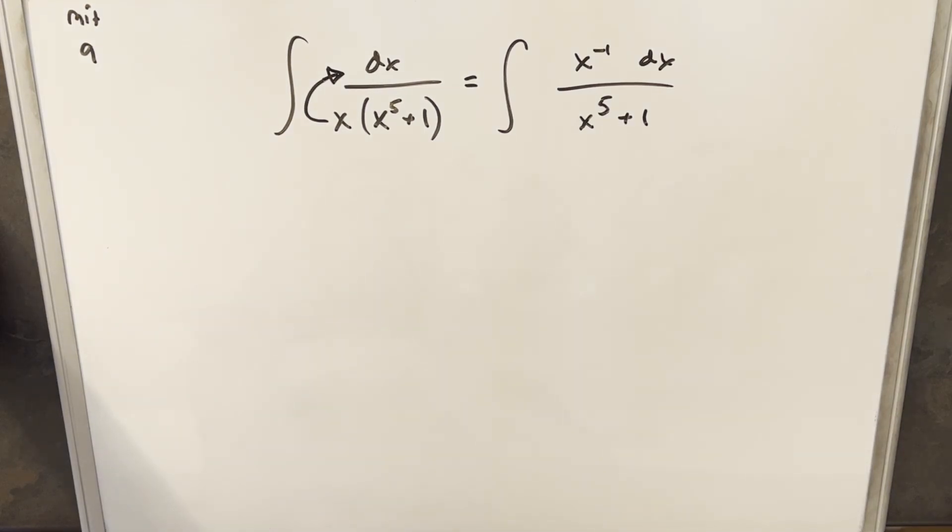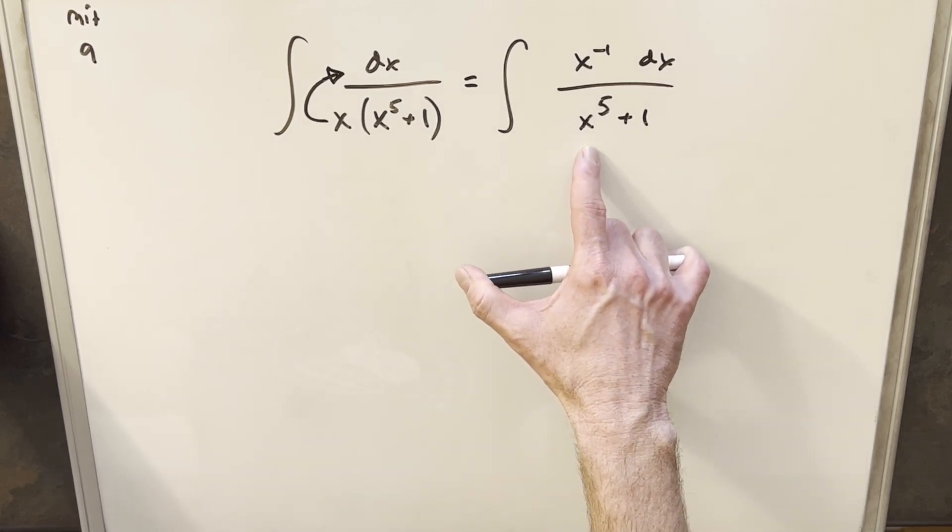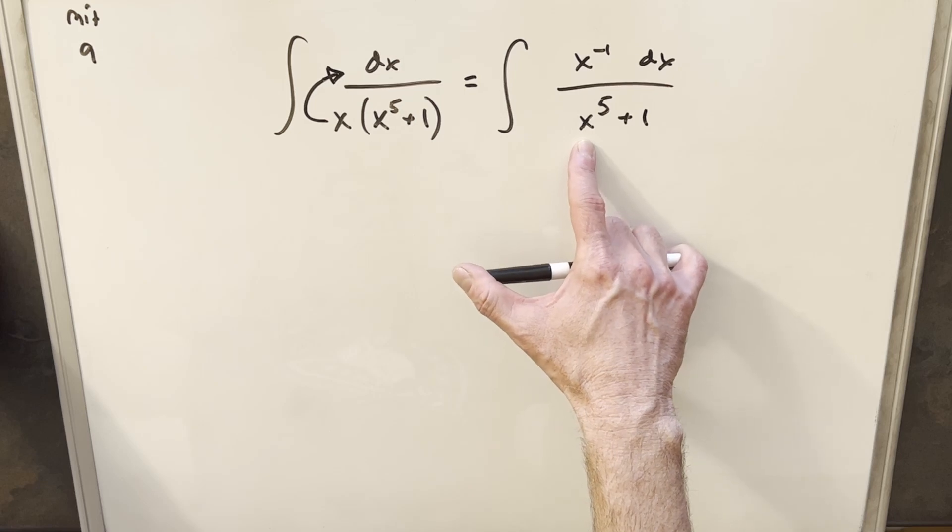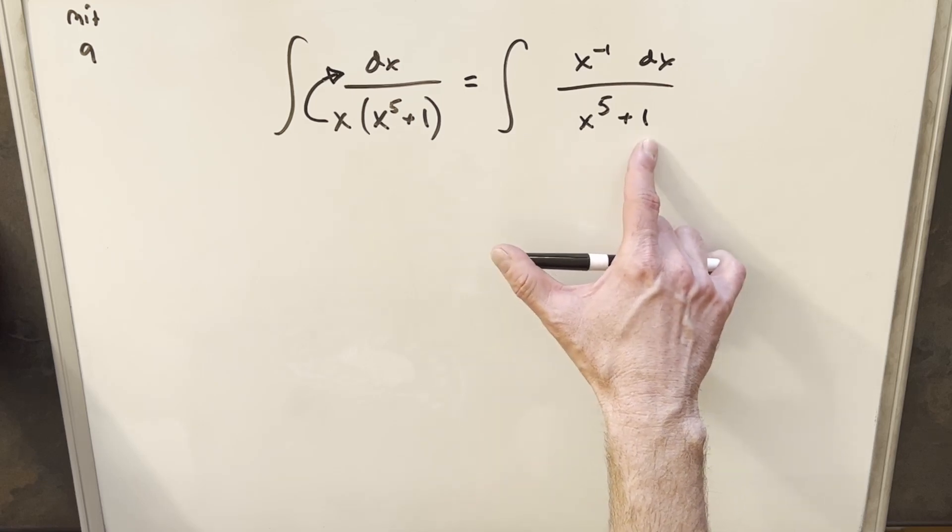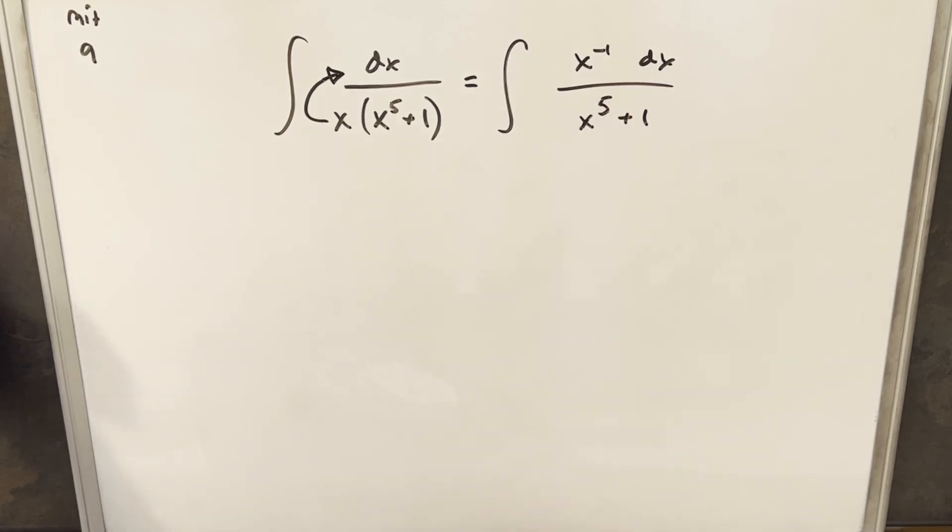what I'm actually trying to set up is I'd like to do a u substitution. And I'd like to make it where my whole denominator is u. Now you notice, I don't want to do it yet, because if we make u equal to this, if we make our u equal to x to the 5th plus 1, derivative is going to be 5x to the 4th. Not really a great match for what we have there.